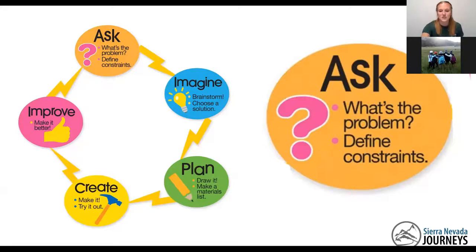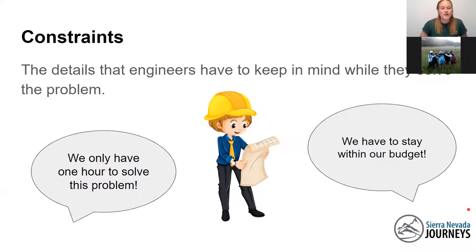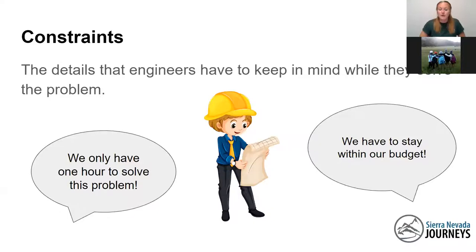Engineers have to define their constraints. A constraint is a detail that engineers have to keep in mind while solving a problem. For example, maybe an engineer only has one hour to solve a problem — that would be a constraint. Another example: maybe you have to stay within a budget, so you only have a certain amount of money to spend. Those are two examples of constraints. Today we're going to talk about a problem I'm having, and I'll tell you the constraints I have to keep in mind.